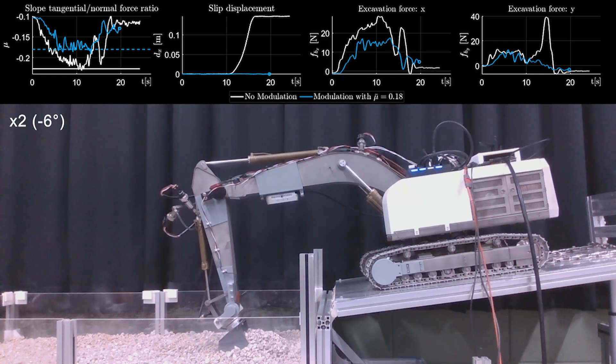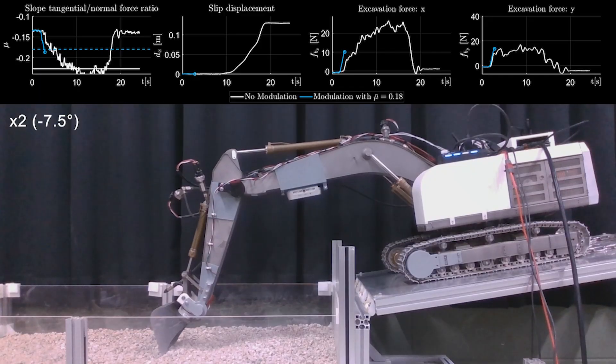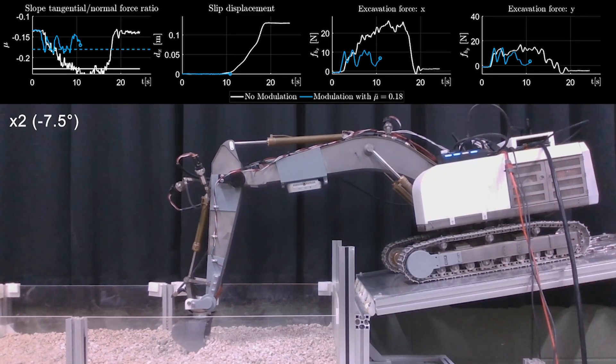The slip is prevented when located at a minus 6 degree slope and also a minus 7.5 degree slope via our real time trajectory modulation framework.